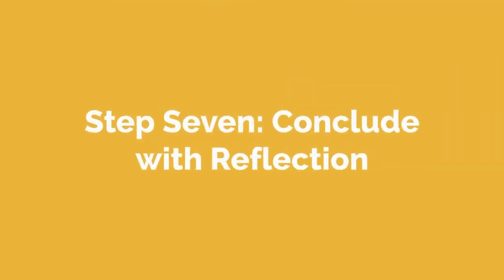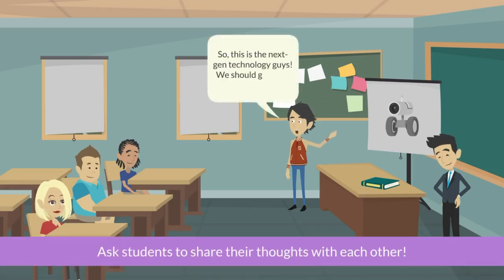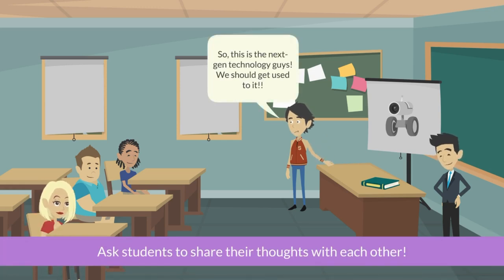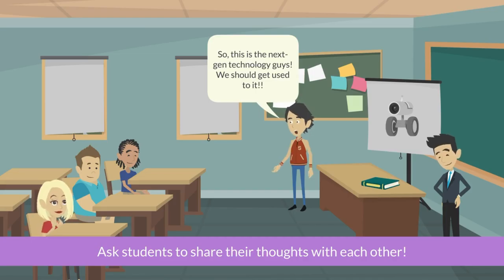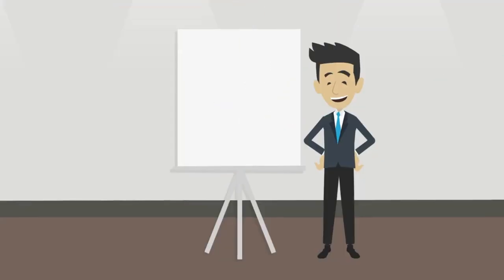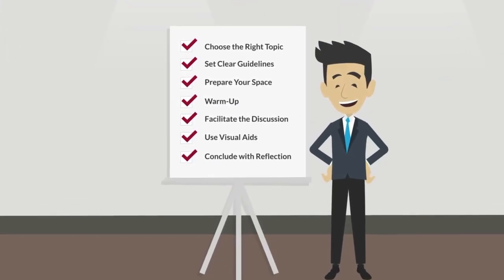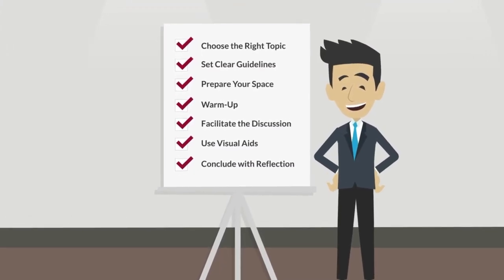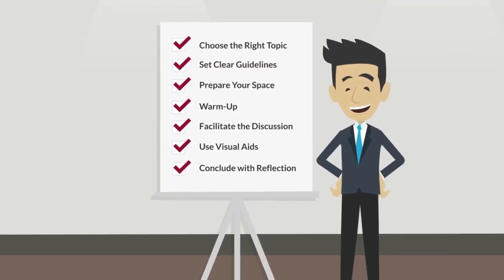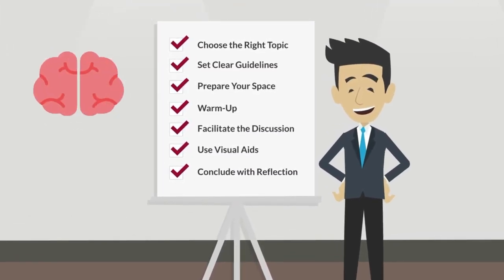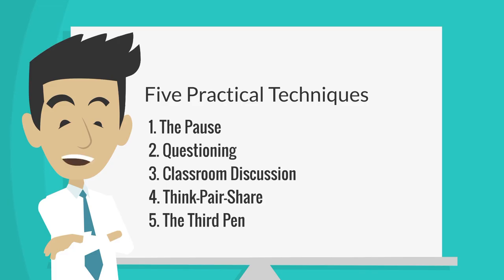Step 7: Conclude with reflection. Wrap up by asking students to share their thoughts on the discussion — what did they learn and how have their views changed? This reflection solidifies the learning experience. By following these steps, you'll create a dynamic learning environment that encourages critical thinking and active participation.